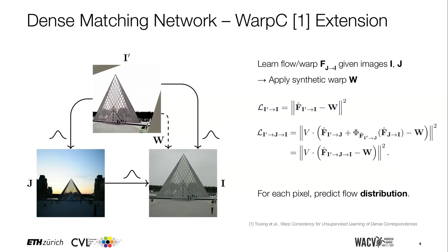Taking a closer look at the alignment step: we design an extension of the warp consistency framework, which learns image warpings in a self-supervised way. Briefly, given two images i and j, we warp i with the synthetic transformation w to obtain i-prime. W then serves as supervision for two flows: the direct flow from i-prime to i, and the indirect flow from i-prime to i via j. Differently from the original warp consistency, we predict a flow distribution for each pixel.